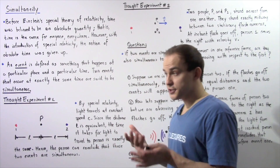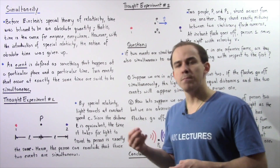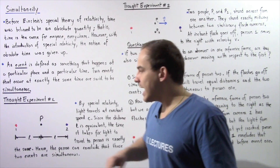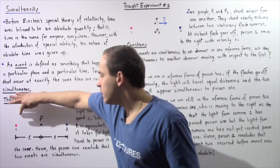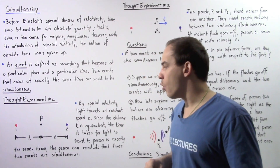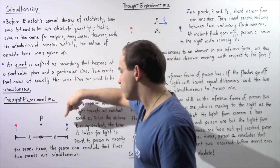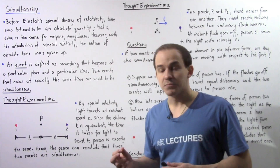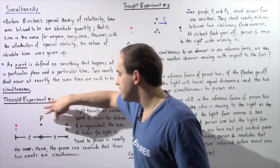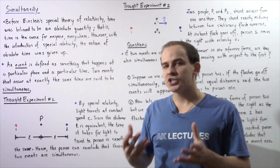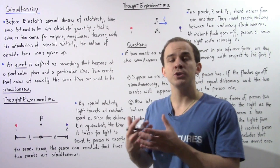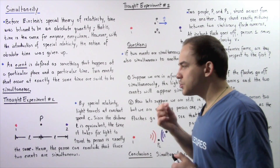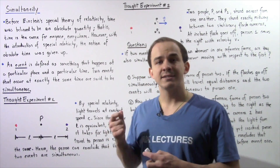A thought experiment is basically an experiment that does not require too many calculations. Let's suppose we have a person standing at point P and two flash cameras, one at point one and the second at point two. The distance between point one and P and point two and P is given by L, and these two L's are exactly the same — so the person is exactly midway between the two flash cameras. A flash camera is basically a camera capable of producing a burst of light. Now let's suppose these two flash cameras go off at the same exact time.